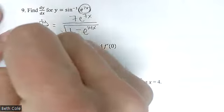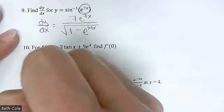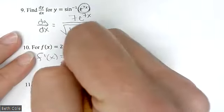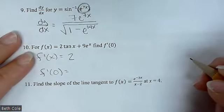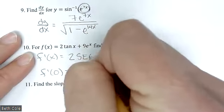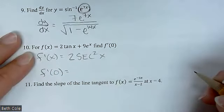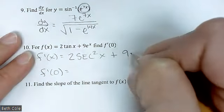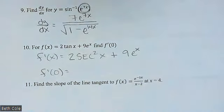Find F prime of zero. So we're going to get the derivative and then plug in zero. We'll have two times the derivative of tangent — good, good job — no chain rule, it's just secant squared. Plus the derivative of 9e to the x, which is 9e to the x. There were no chain rules there, which was nice. Now we're going to plug in zero.